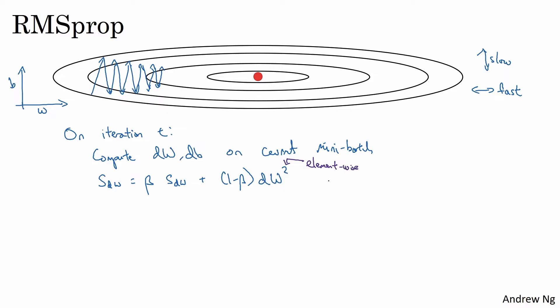So what this is doing is really keeping an exponentially weighted average of the squares of the derivatives. And similarly, we also have sdB equals beta sdB plus 1 minus beta dB squared. And again, the squaring is an element-wise operation.